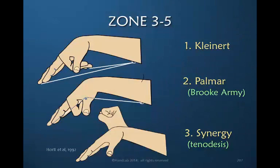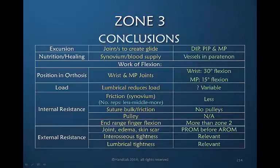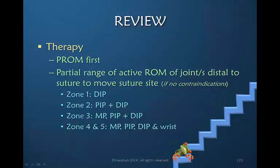The protocol that includes the wrist becomes more relevant as we think about the more proximal zones. Here, compiled are all the variables that would affect a flexor tendon repair within zone three. Therapy always begins with passive range of motion first, regardless of the protocol, and if active range of motion has been chosen, it is important that initially that range of motion is partial.